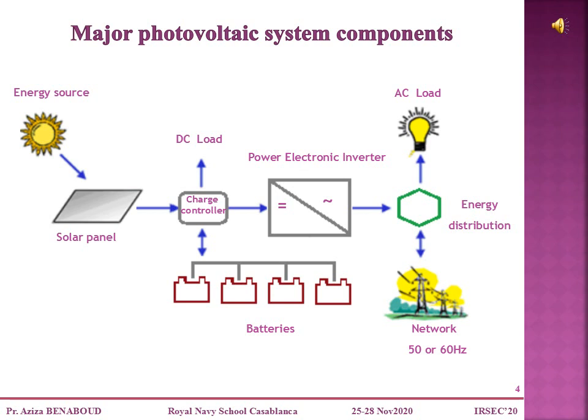The charge controller contains DC-DC converters together with a maximum power point tracker in order to make the PV voltage and current independent from the battery voltage and current. The power electronic inverter converts the DC electricity coming from the PV array into AC electricity network with 50 or 60 Hertz.